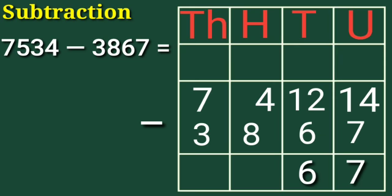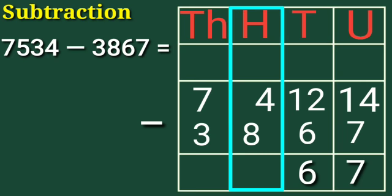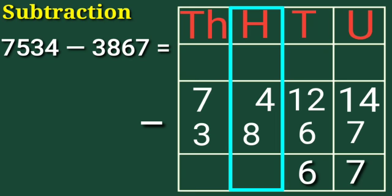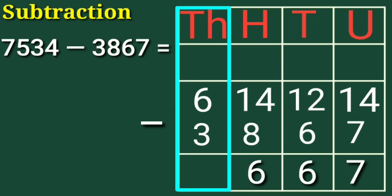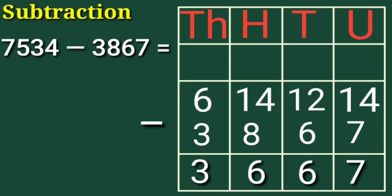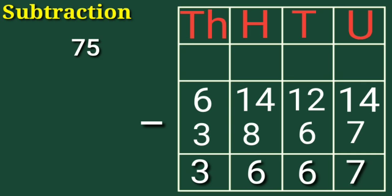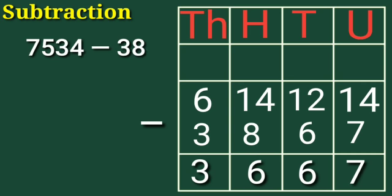Now observe the hundreds column: 4 is smaller than 8. So regroup — 7 thousands and 4 hundreds becomes 6 thousands and 14 hundreds. Now subtract hundreds: 14 minus 8 is equal to 6 hundreds. Now subtract thousands: 6 minus 3 is equal to 3 thousands. So 7,534 minus 3,867 is equal to 3,667.